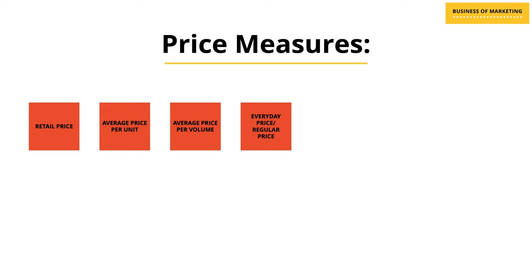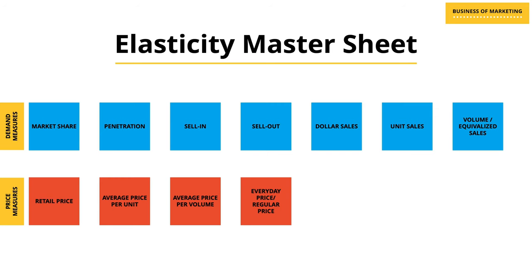Let's take a look at some of the pricing measures you can use to calculate price elasticity of demand. In my recent video I discussed different measures of pricing — the ones most relevant for price elasticity of demand are: retail price, average price per unit, average price per volume, and everyday or regular price. And because I love creating one master sheet where I can collapse all the information, here it is: demand measures include market share, penetration, and more; pricing measures include retail price, average price per unit, and so on.